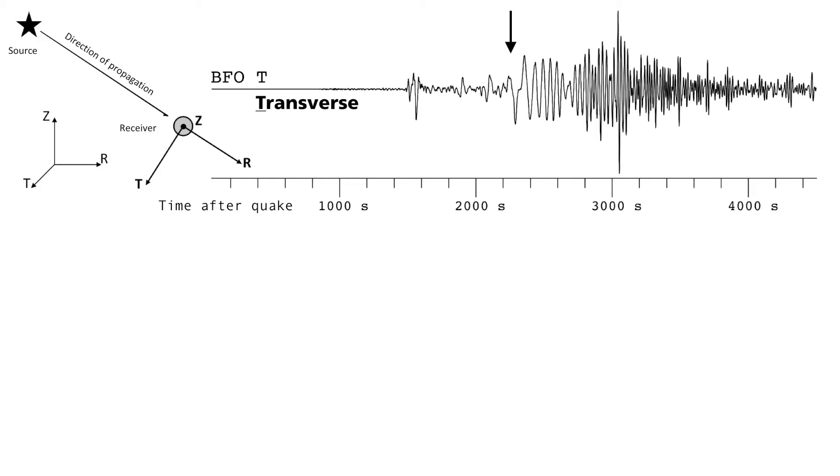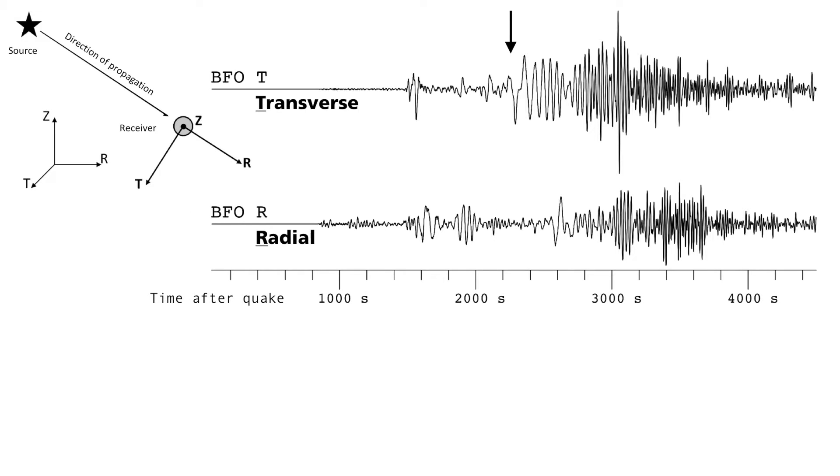Shown here is the transverse direction t, which oscillates orthogonally to the direction from which the earthquake waves arrive. You can see the radial component here. It indicates the direction of oscillation parallel to the direction of propagation of the waves. Clearly, the surface waves are arriving later here.